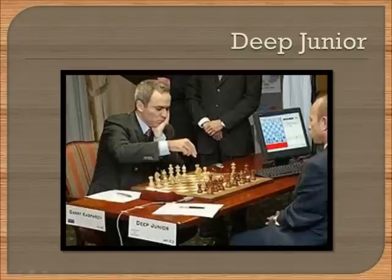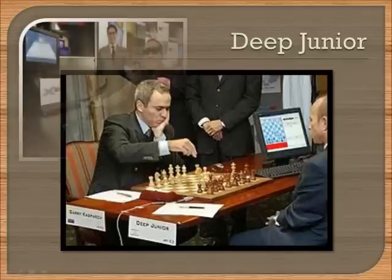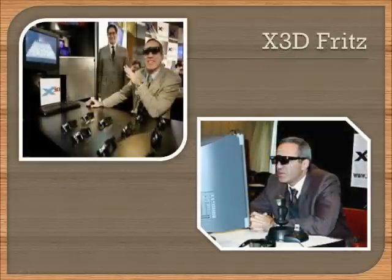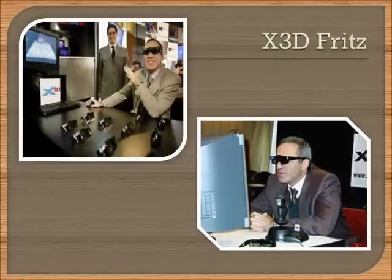In January 2003, Kasparov played with Deep Junior, which evaluated 3 million positions per second — the game ended in a draw. In November of 2003, Kasparov played against the X3D Fritz using a virtual board, 3D glasses, and a speech recognition system. After 2 draws and 1 win each, the X3D Fritz man-machine match also ended in a draw.